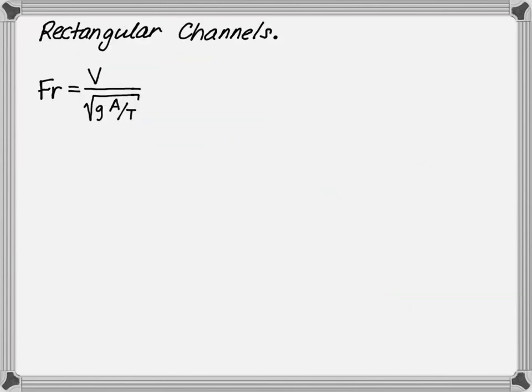Now let's talk about how to determine critical depth for common channel types such as a rectangular channel. For rectangular channels, the following derivation will assist in determining the critical depth. The Froude number is equal to the velocity divided by the square root of gravity times the cross-sectional area divided by the top width. Since velocity is flow rate divided by area, we can rewrite the Froude number equation where it equals the flow rate divided by the square root of gravity times the area cubed divided by the top width.